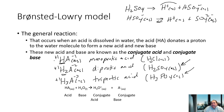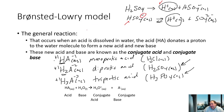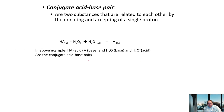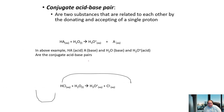Is it easier to remove the first or second hydrogen from a polyprotic acid? The first is easier — after losing it, the molecule has a negative charge, making it much harder to remove a positive H+ from a negatively charged species. The third hydrogen (in triprotic acids) is hardest of all to remove.